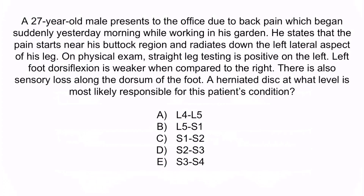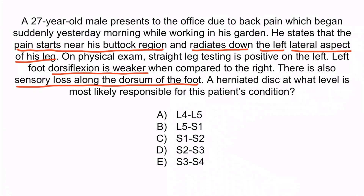From the question stem, notice that this patient has sciatica, based on pain that starts near the buttock region and radiates down the left lateral aspect of his leg. This is most commonly due to a herniated disc, which is likely what occurred given the acute nature of his condition. L5 or S1 compression are most commonly affected. In this patient, the L5 nerve root is compressed. Recall that the L5 dermatome corresponds to the dorsum of the foot and the L5 myotome to dorsiflexion of the foot. L5 compression also results in pain that radiates along the lateral aspect of the leg, whereas S1 compression results in pain along the posterior aspect of the leg. Since the L5 nerve root is compressed, a herniated disc at L4 to L5 is responsible — because a herniated disc protrudes posterolaterally and inferiorly, compressing the nerve roots below it. Therefore, a herniated disc at L4 to L5 would compress the L5 nerve roots. The correct answer is A, L4 to L5.